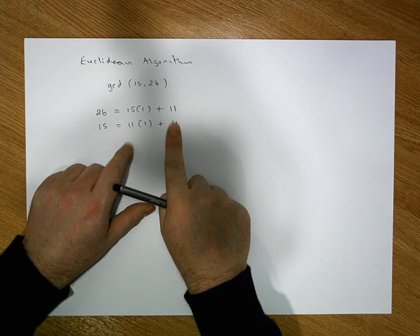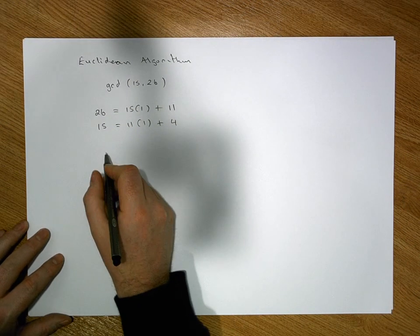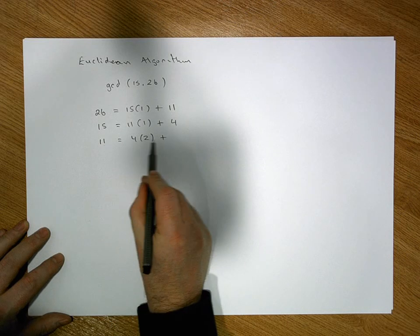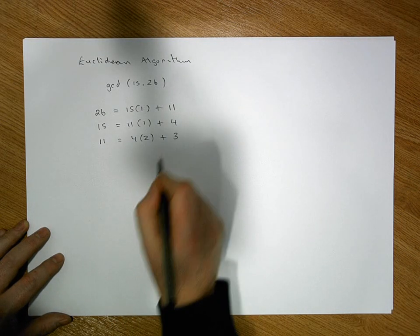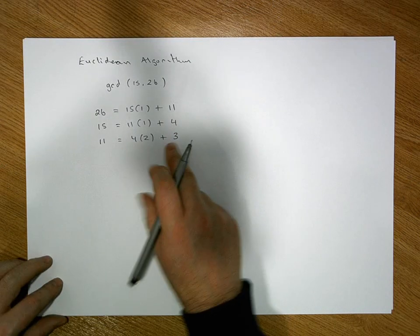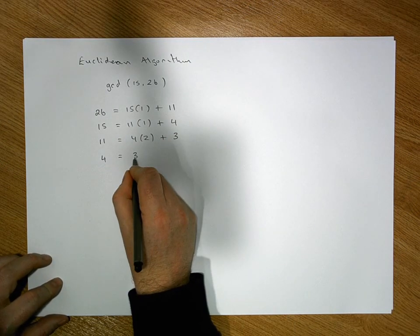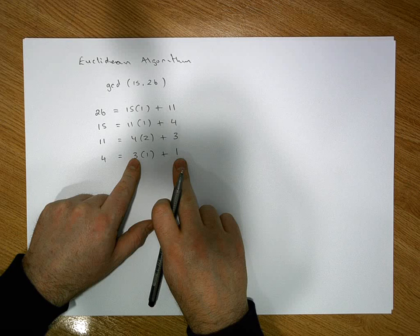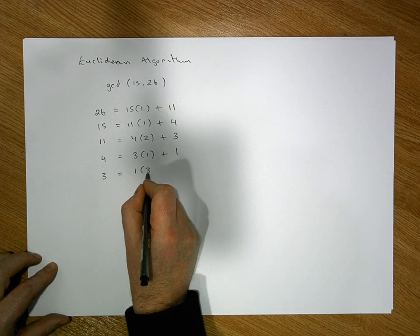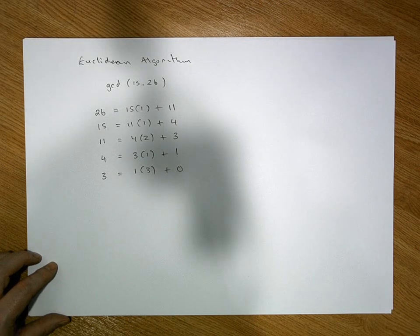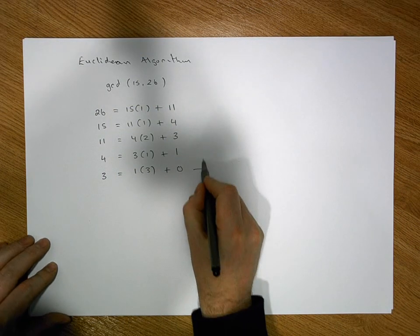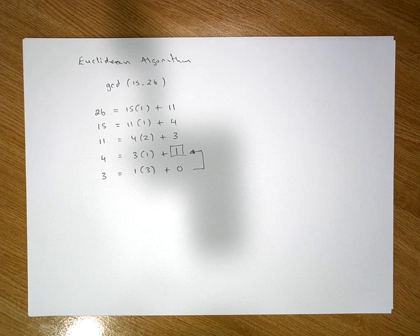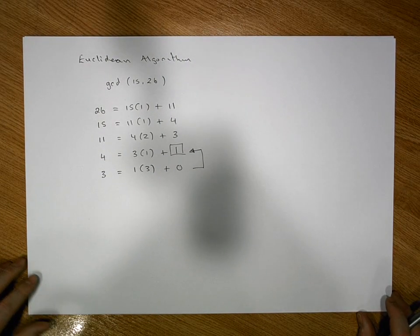Continuing: how many times does 4 divide into 11? It goes twice, so 11 equals 4 times 2 plus a remainder of 3. Then 4 equals 3 times 1 plus a remainder of 1. Finally, 3 equals 1 times 3 plus a remainder of 0. The last non-zero remainder is 1, so the gcd of 15 and 26 equals 1.